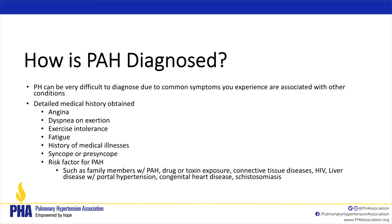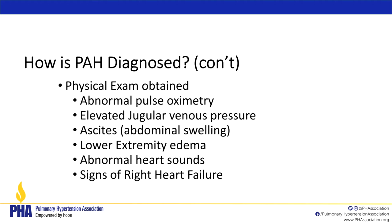We start with a very detailed medical history. We ask about angina or chest pain, dyspnea on exertion, shortness of breath at rest, exercise intolerance, fatigue, history of medical illnesses, and syncope or pre-syncope — dizziness or feeling like you're going to pass out. We also look at risk factors: family history of liver disease, connective tissue disease, congenital disease, and hypertension. Then we perform a thorough physical exam.